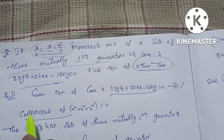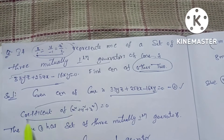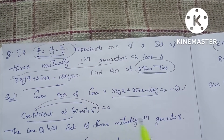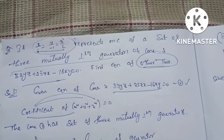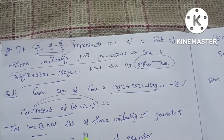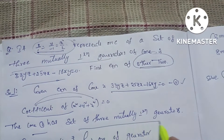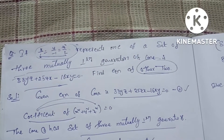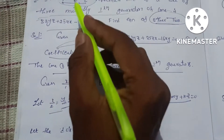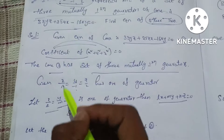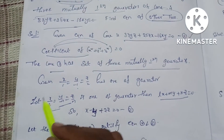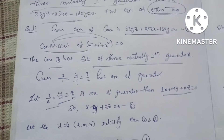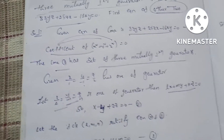The condition for mutual perpendicularity is: the coefficient of x² plus the coefficient of y² plus the coefficient of z² is equal to 0. Therefore, the cone has a set of three mutual perpendicular generators. Given, we have a generator equation: let x/l = y/m = z/n be one of the generators.